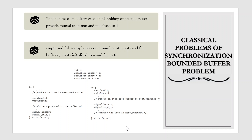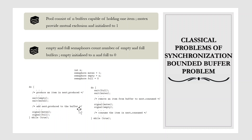This is the code for the producer process and this is the code for the consumer process. Note the symmetry between the producer and the consumer. We can interpret this code as a producer producing full buffers for the consumer, or the consumer producing empty buffers for the producer. In the producer, the producer produces an item and places it in next_produced, then it calls wait on the empty semaphore, which decrements the value of N by 1. Then it performs wait on the mutex, making the mutex value 0. It then adds next_produced to the buffer. Then it calls signal on mutex, making its value 1 again, and then performs signal on full, so the value of full becomes 1.